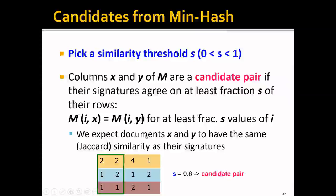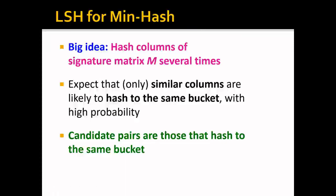We expect documents x and y to have the same Jaccard similarity as their signatures — recall the proof of minhash. Therefore, we can say that the Jaccard similarity of these documents will be above 0.6. The big idea of LSH for minhash is to hash columns of the signature matrix several times, so that similar columns are likely to hash to the same bucket with high probability, and the candidates are those hashed to the same bucket.